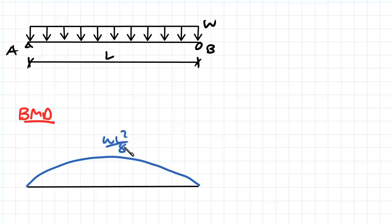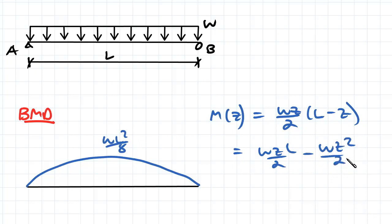And if you were to take a cut at any point along your beam here, what you'd find is that the equation of the bending moment in terms of Z is equal to WZ over 2 times (L minus Z). And that is equal to WZL over 2 minus WZ squared over 2.